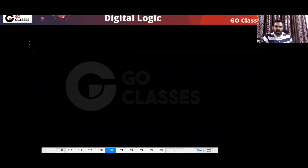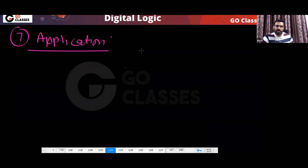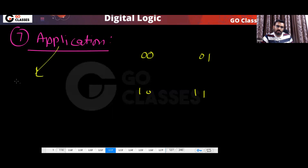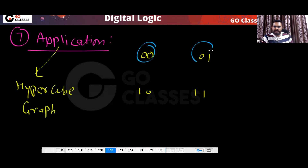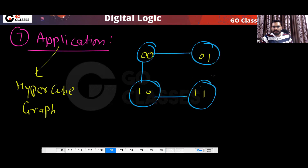Another application — have you seen this in discrete mathematics? When one bit is changing between two codes, we connect them — this forms the hypercube graph. When one bit is changing, we connect those nodes in the hypercube graph.